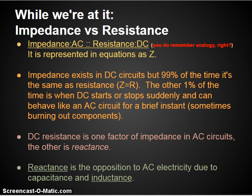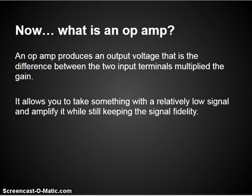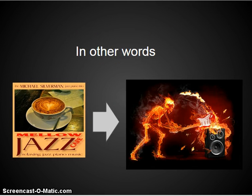Now that we've gotten that out of the way, let's talk about what an op-amp is. By definition, an op-amp produces an output voltage that is the difference between two input terminals multiplied by the gain. It allows you to take a low signal and turn it into a high signal while doing a fairly good job of keeping the signal fidelity. It's used in all sorts of amplification — for example, turning smooth jazz into death metal. You take a small signal and turn it into a much greater signal by multiplying it by a specific gain.